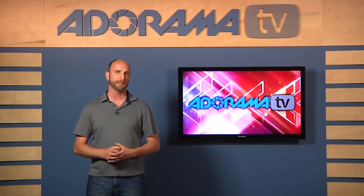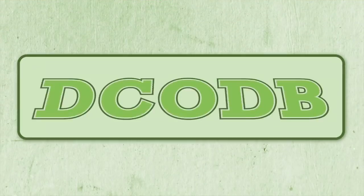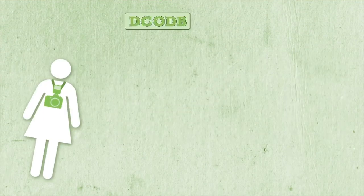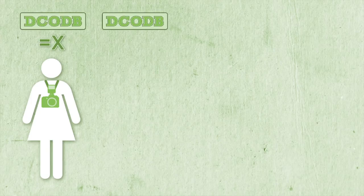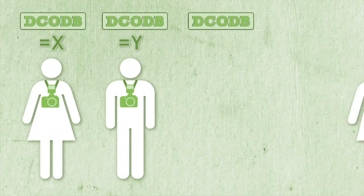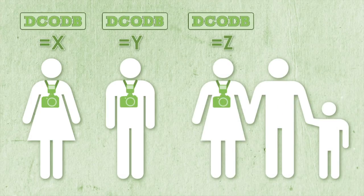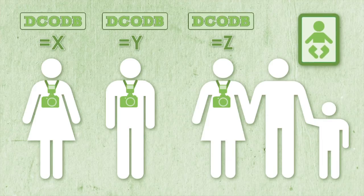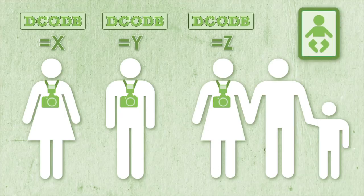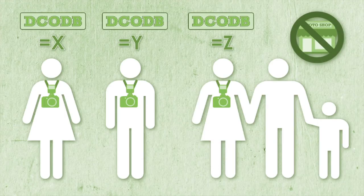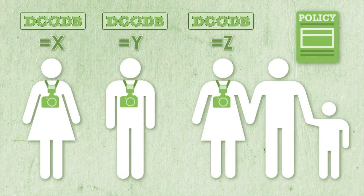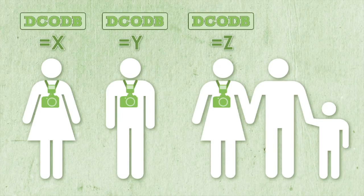Daily cost of doing business is going to be different for different people. For instance, if you're a married stay-at-home mom who shoots children's portraits, your retirement and benefits are probably covered by your spouse. And if you don't own a studio, your rent is lower and your insurance rates are different. It's different for each photographer.